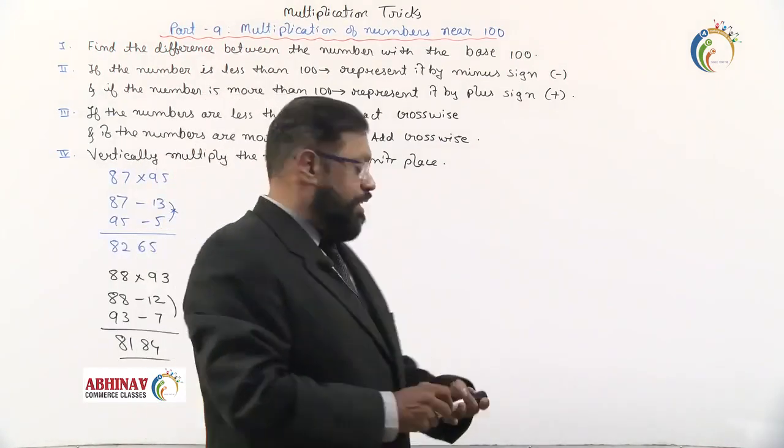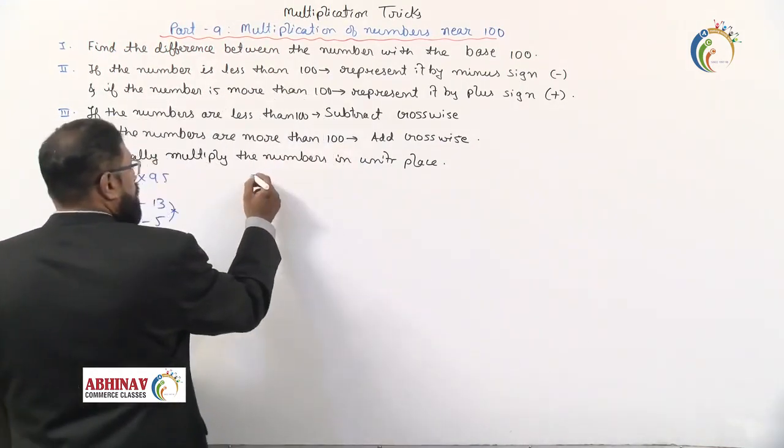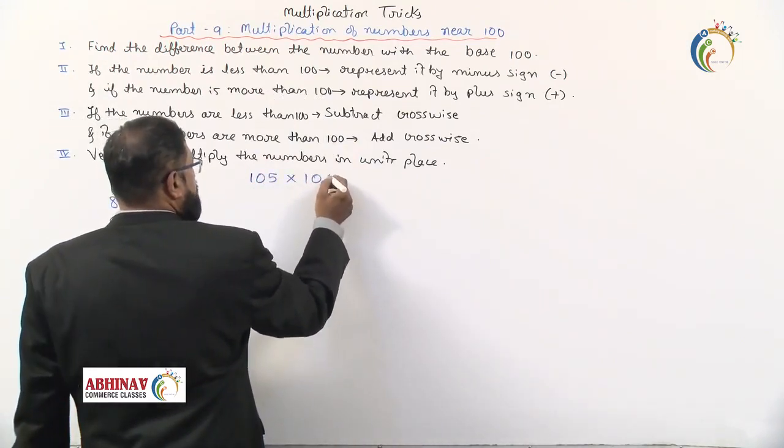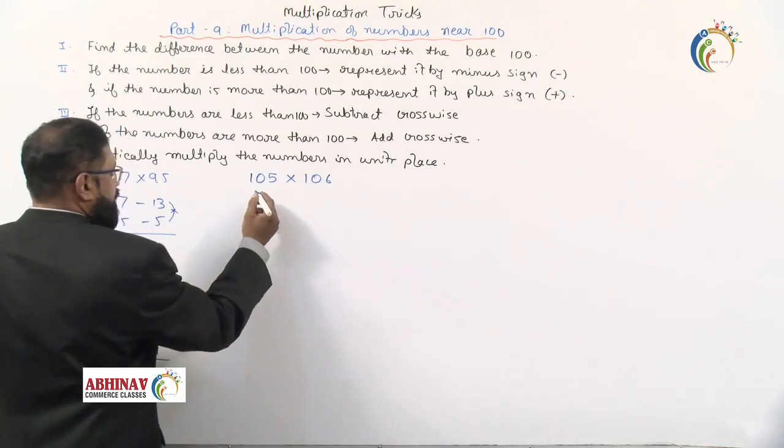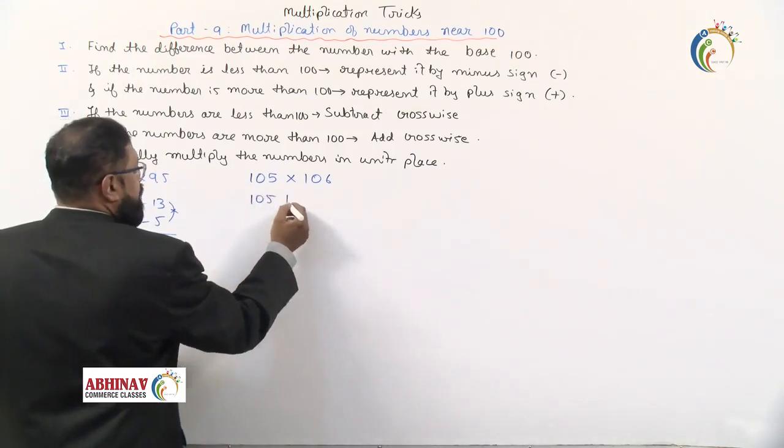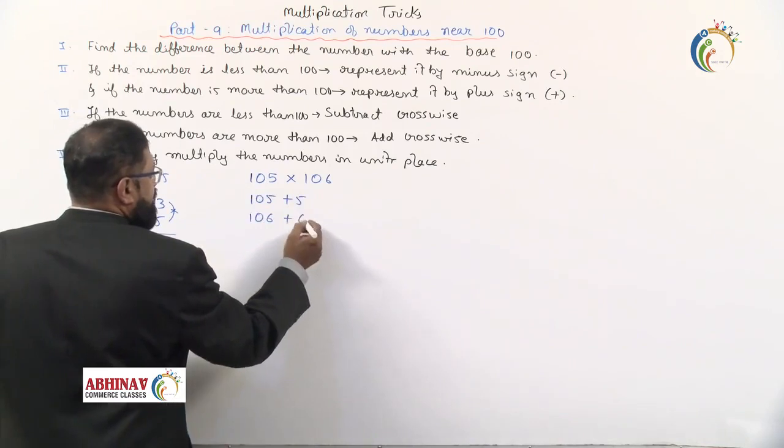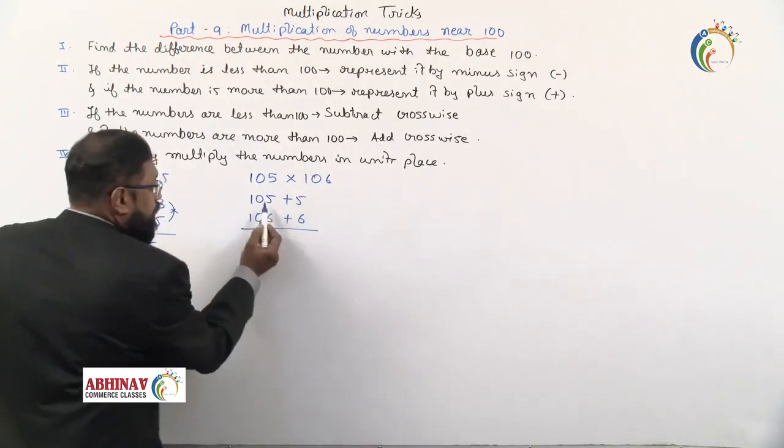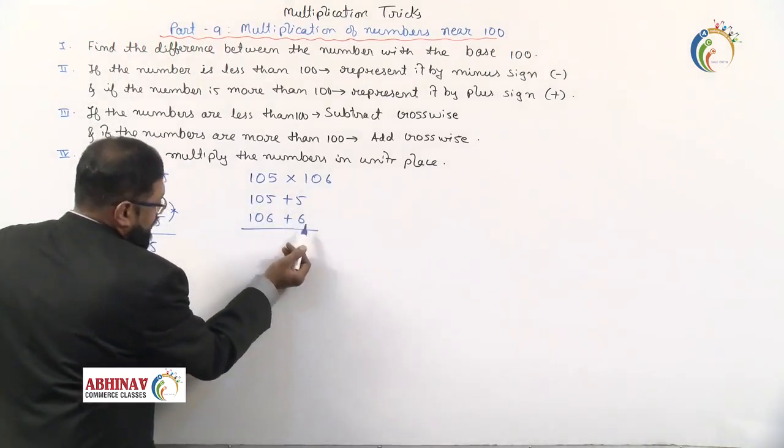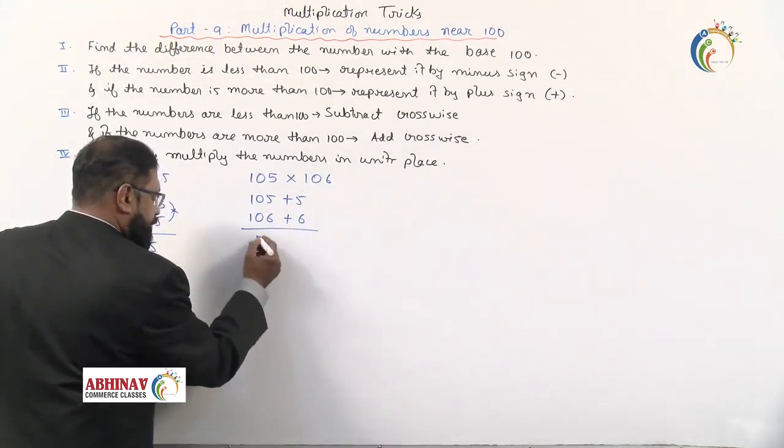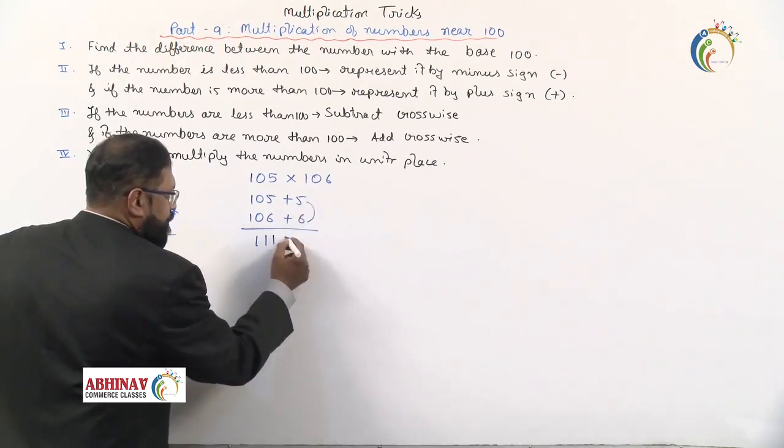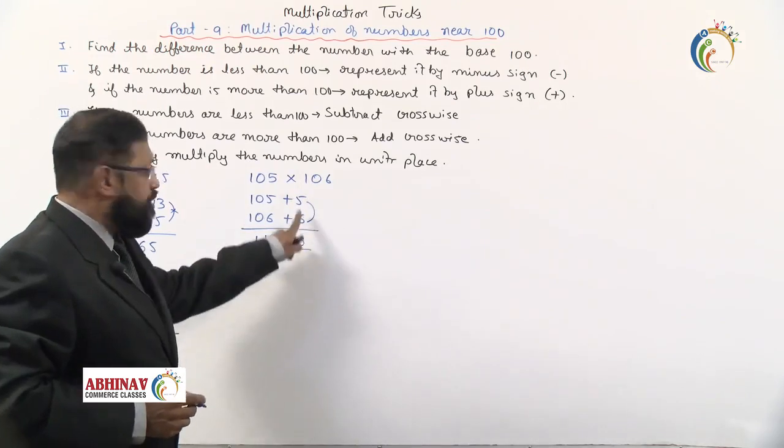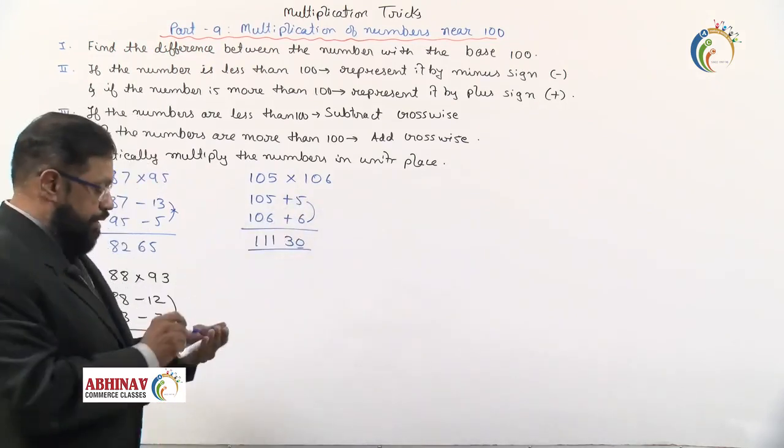Now take 105 times 106. 105 is 5 more, 106 is 6 more. Cross add, not subtract, because the numbers are more than the base. 105 plus 6 equals 111, which is the same as 106 plus 5. Then 6 times 5 equals 30. Two digits are allowed because the base is 100. The answer is 11130.